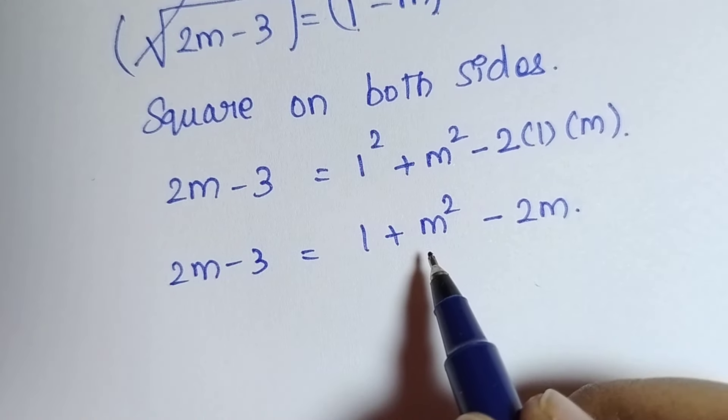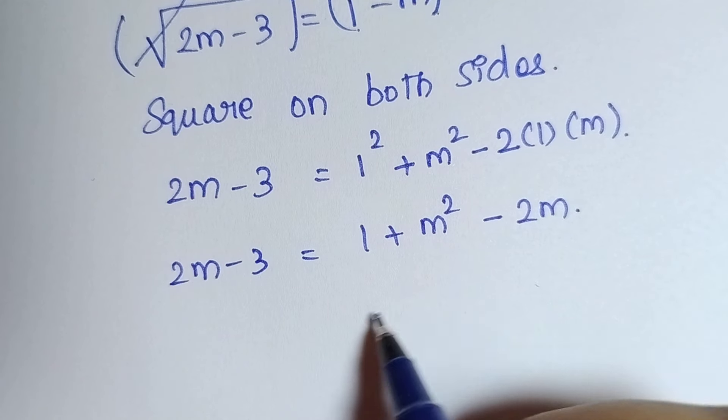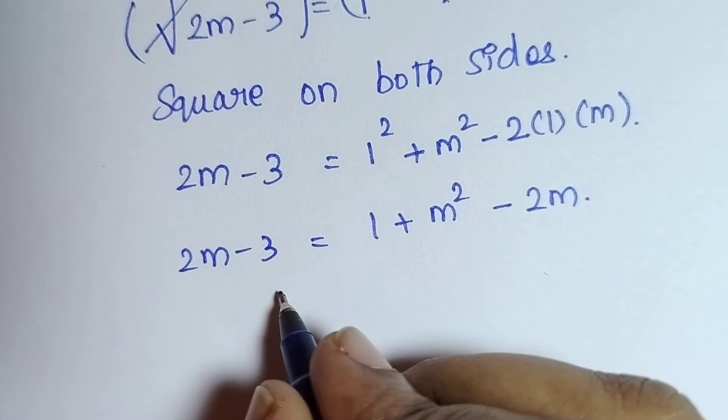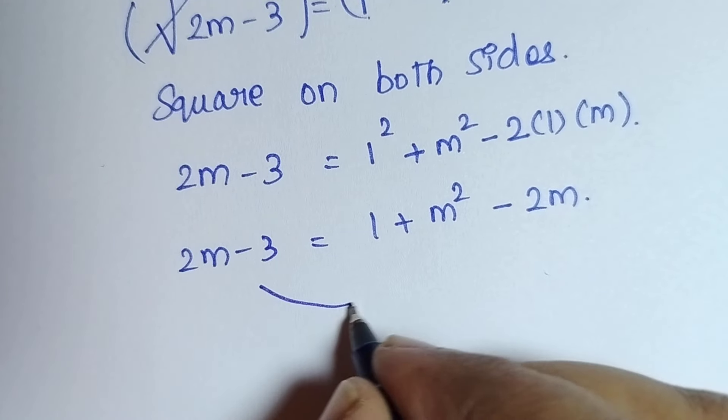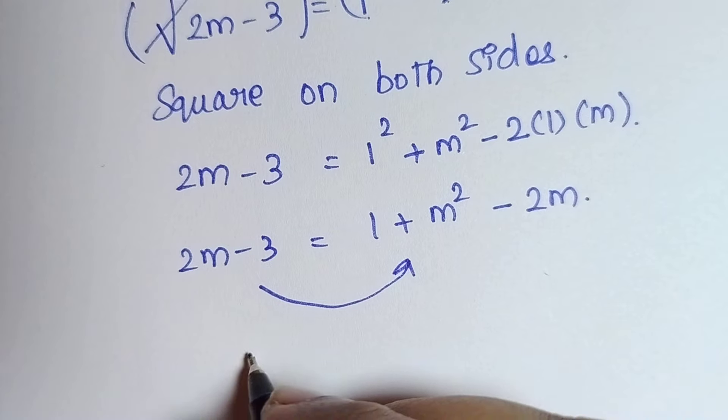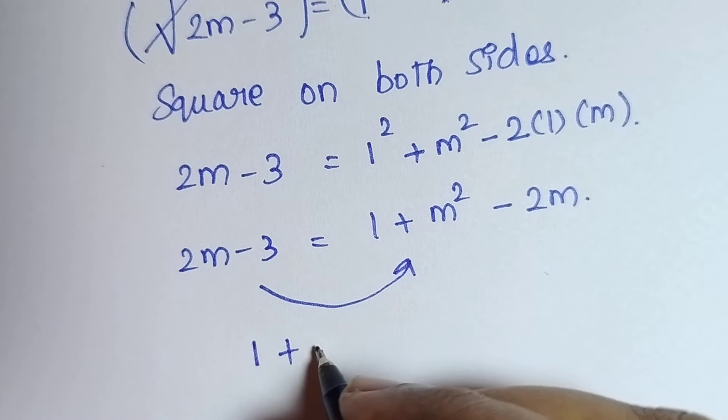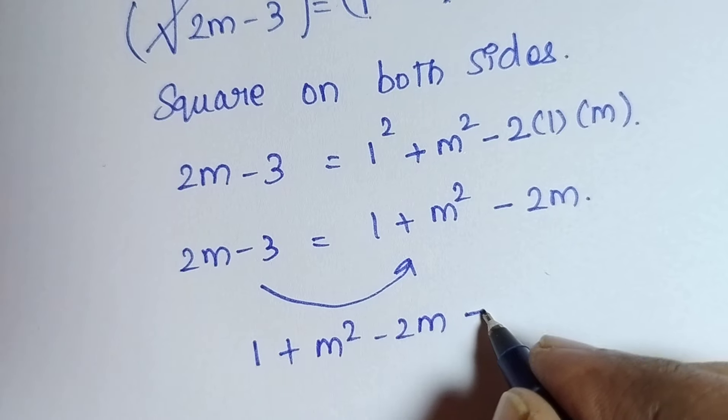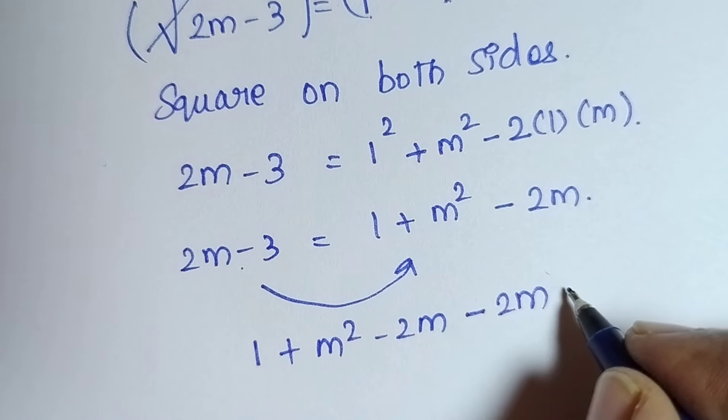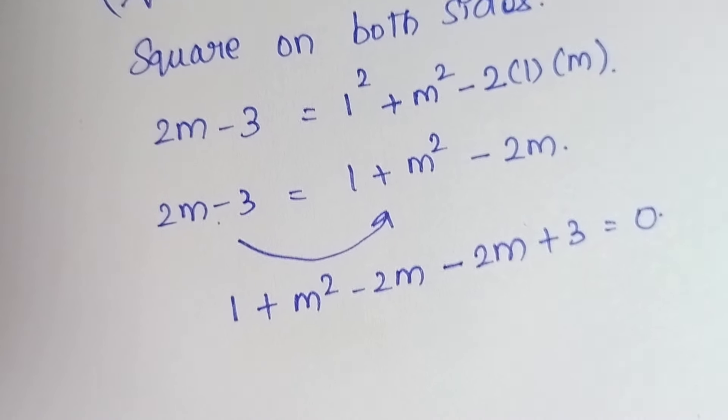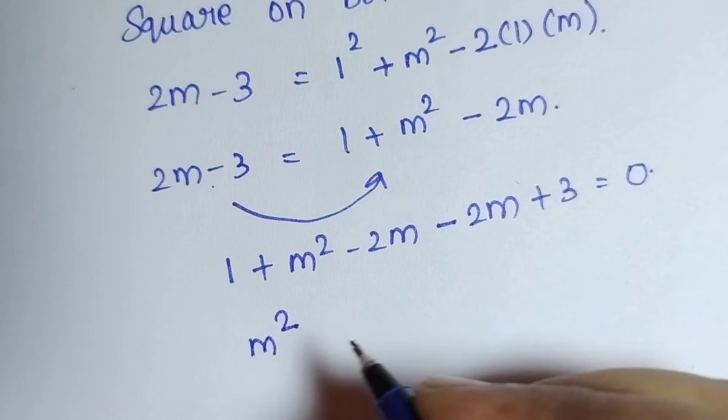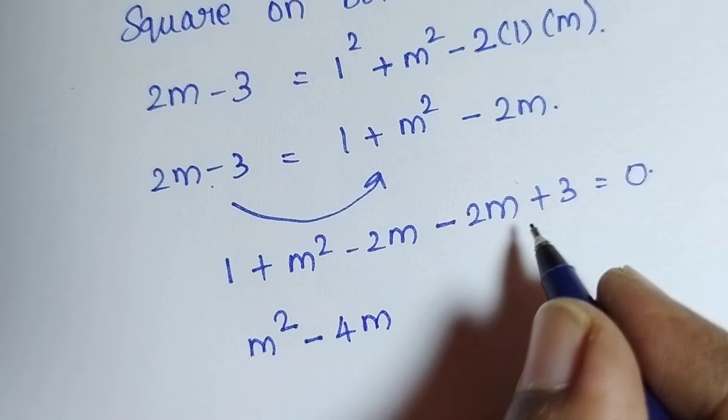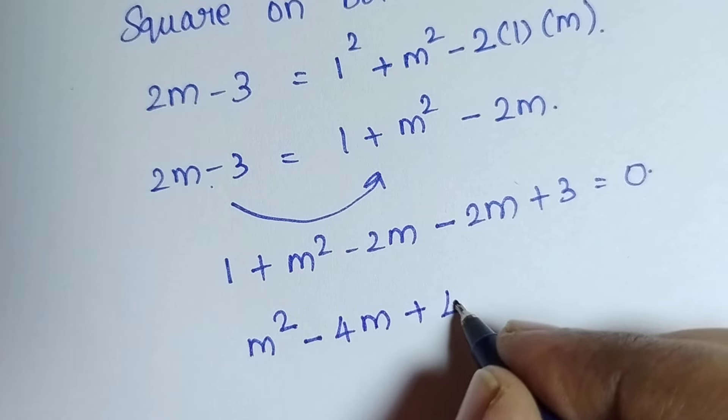Now I am going to shift every term towards the right side and make this as an equation. Here 1 plus m square minus 2m. We are going to shift this towards this side. Therefore, 2m becomes minus 2m and minus 3 becomes plus 3 which is equal to 0. I am going to arrange this in order, the greater term is m square. After that, 2m minus 4m plus 3 plus 1, 4 which is equal to 0.